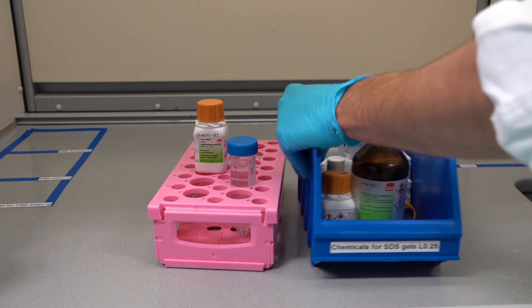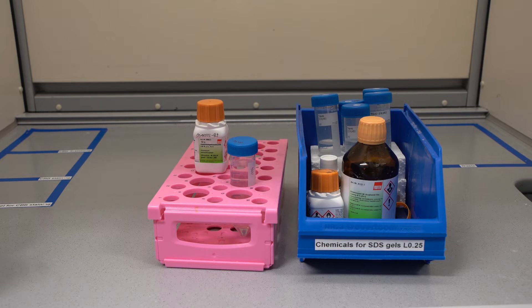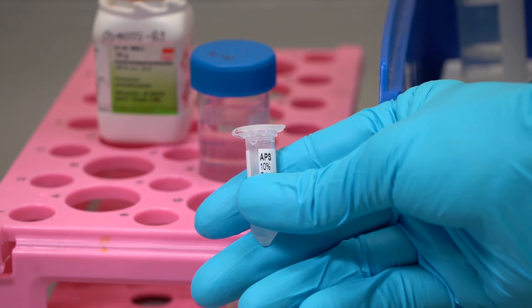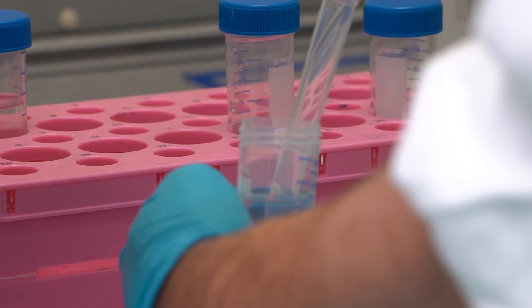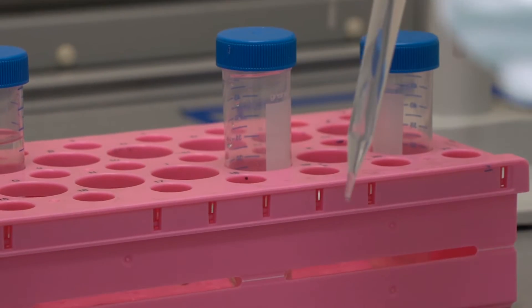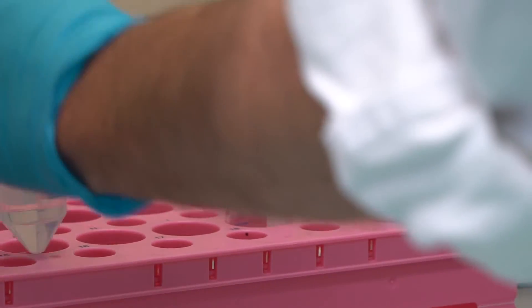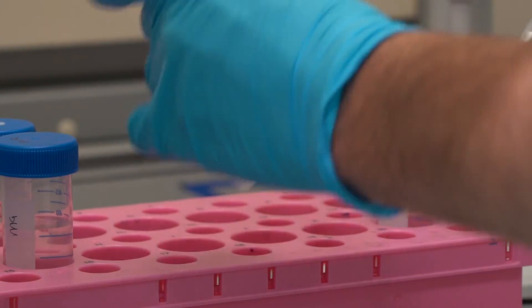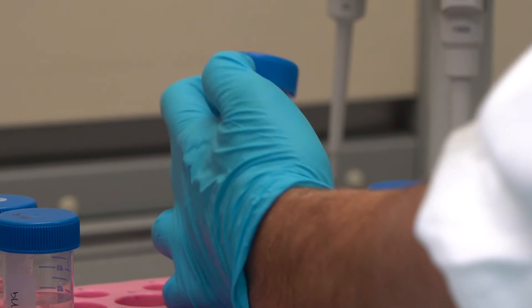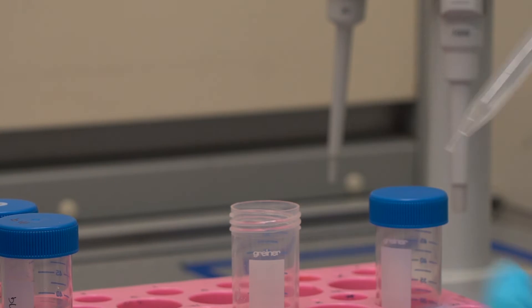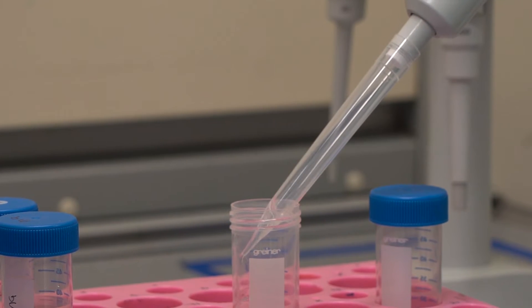To make the gels, you will first need to make a 10% APS solution, and this must be made fresh. You will also need Tris HCl pH 8.8 and Tris HCl pH 6.8, Millicube water, 10% SDS, acrylamide bisacrylamide, your APS, Temed, and isopropanol.